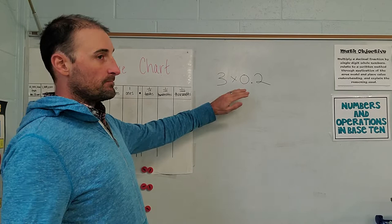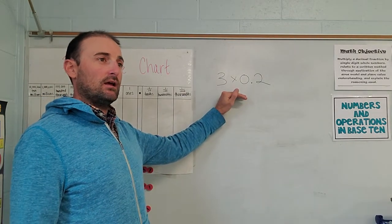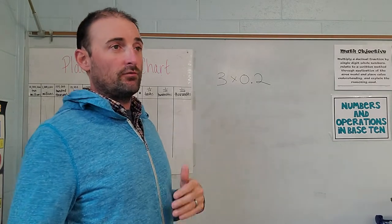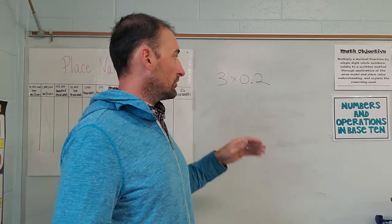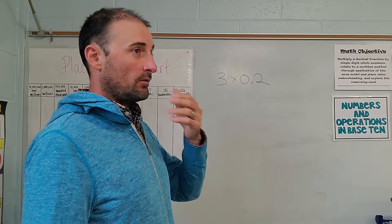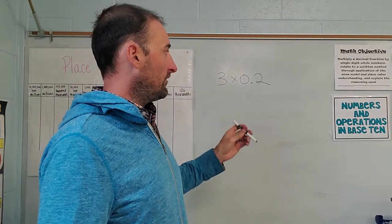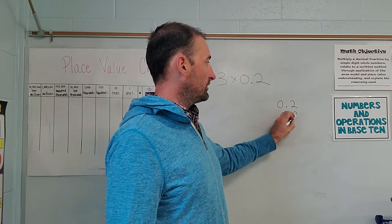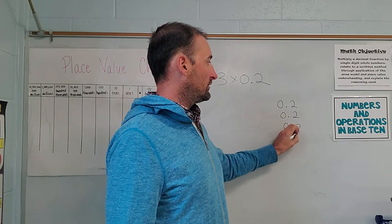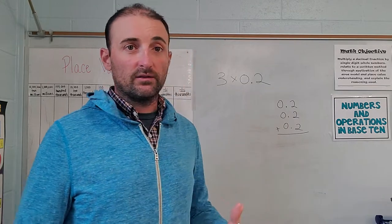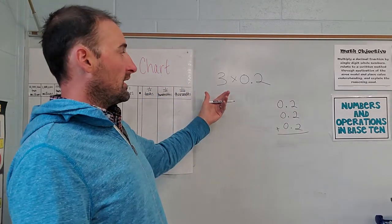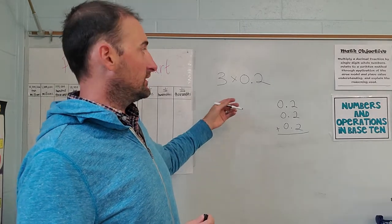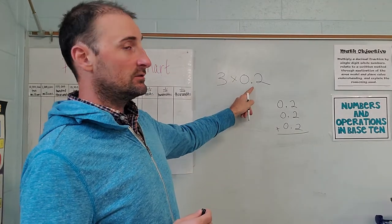So in our first problem in lesson 11, it asks us to multiply 3 times 2 tenths. Reading that is very important: 3 times 2 tenths. Another way to think of this is multiplication is repeated addition, so we have three groups of 2 tenths. We can add them to find the same answer, but we can multiply and the product and the sum are going to be the same. I like to read this as three groups of 2 tenths.